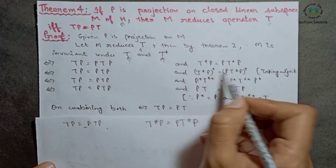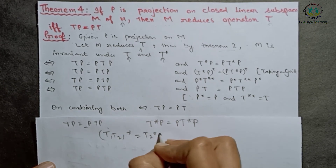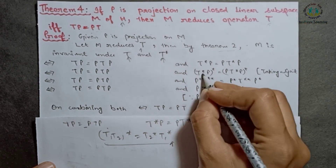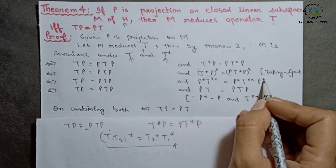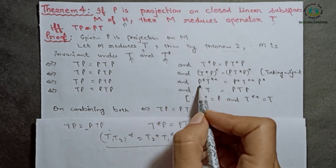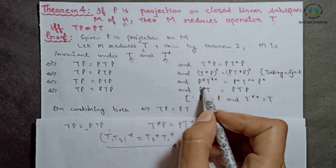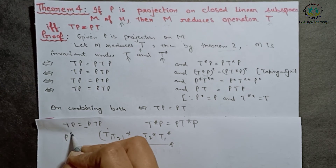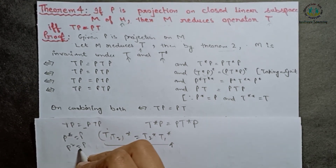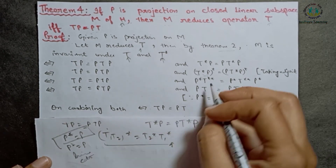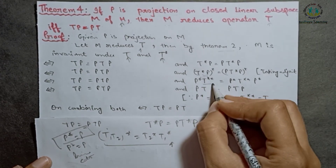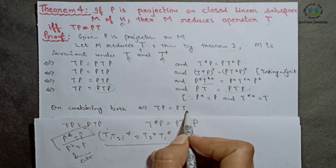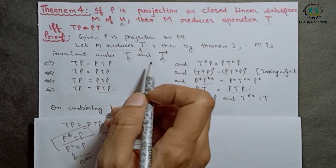Using both results — TP equals PTP and T* P equals PT* P — and taking adjoints, along with the facts that P star equals P (since P is a self-adjoint projection) and T double star equals T, we combine to get TP equals PT. Conversely, TP equals PT implies M reduces T. So M reduces operator T if and only if TP equals PT.